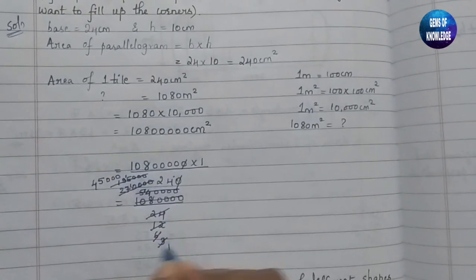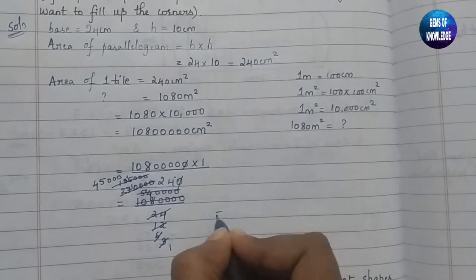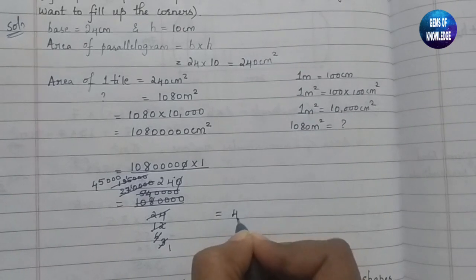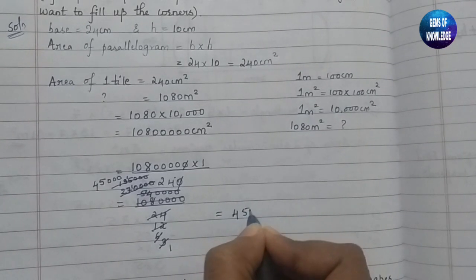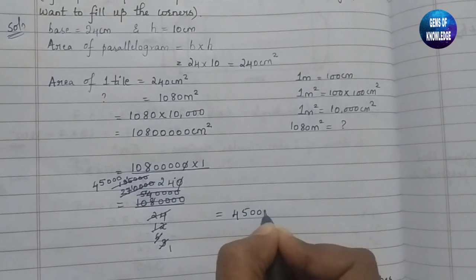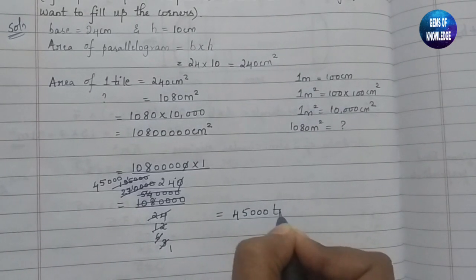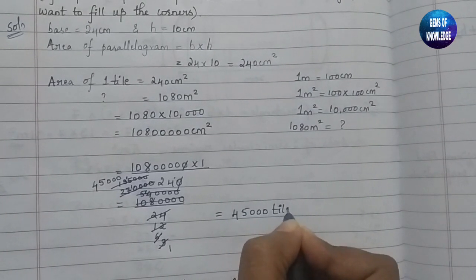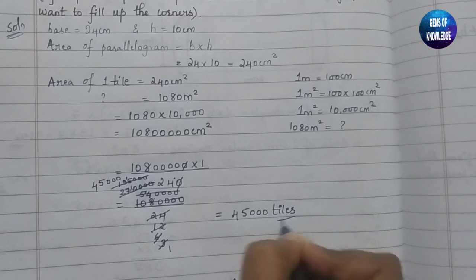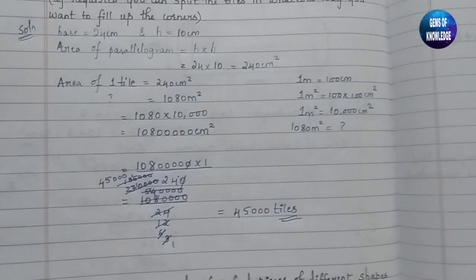So the number of tiles required is 45,000 tiles.